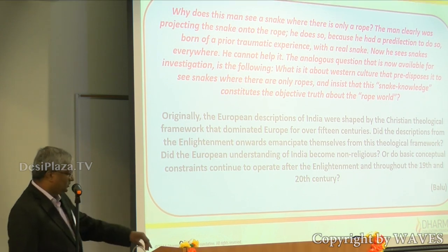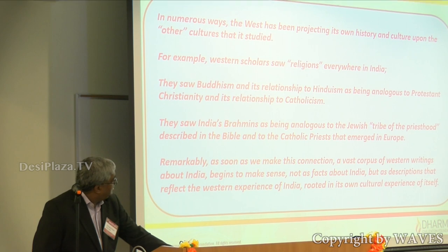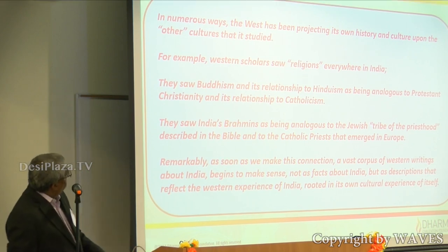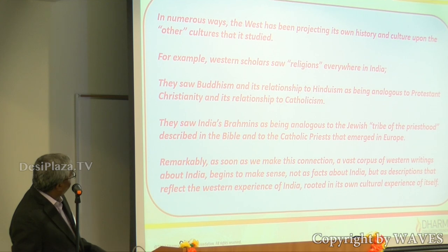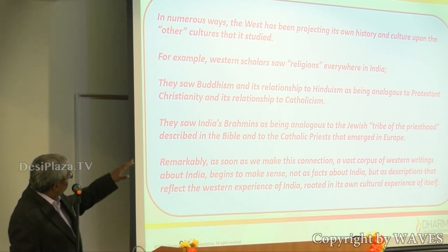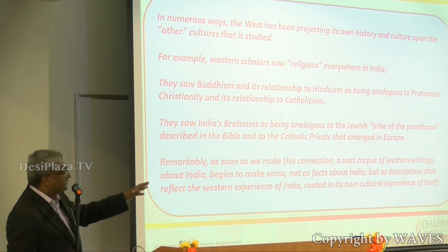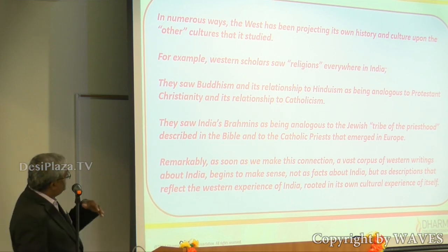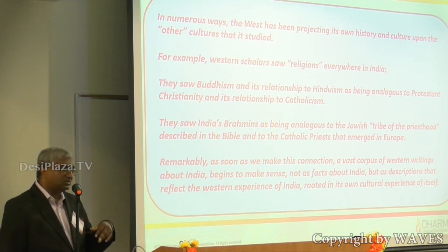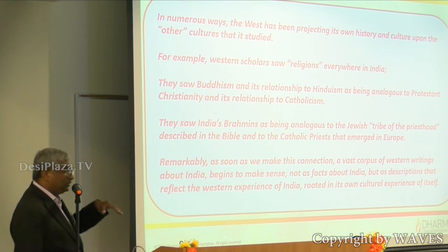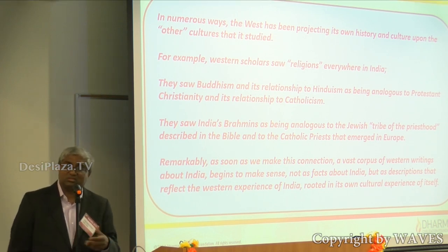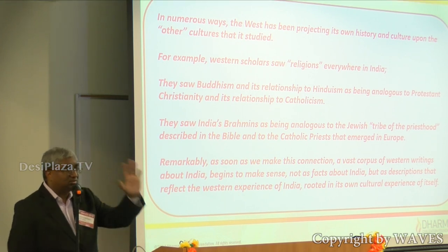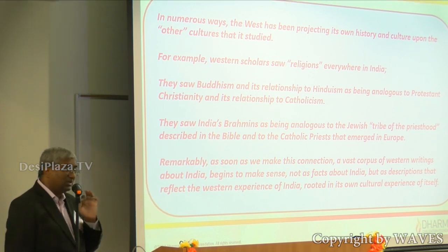The implications of these two premises is that in numerous ways the West has been projecting its own history and culture upon other cultures that it studied. For example, they saw Buddhism and its relation to Hinduism as being analogous to the relationship between Protestant Christianity and Catholicism. You can now begin to generate a tremendous number of examples of how this projection — this adhyasa, the projecting of the snake onto the rope — has been going on and can be investigated.